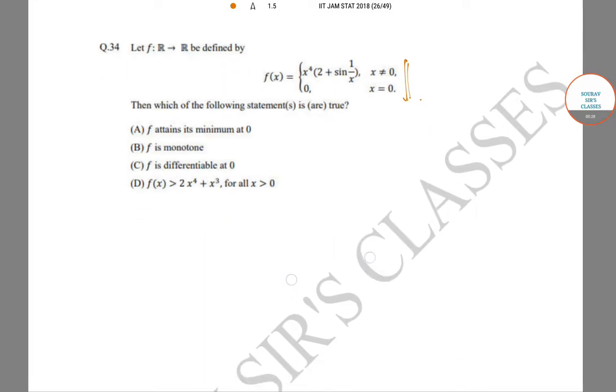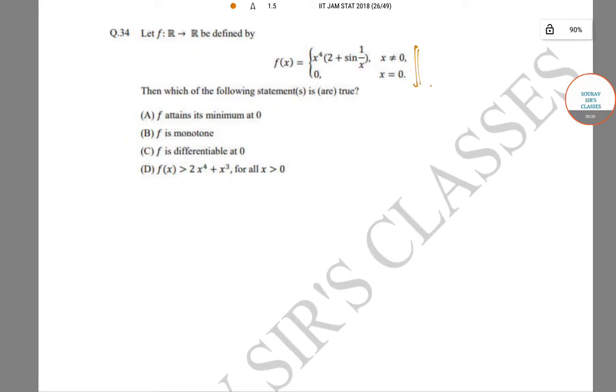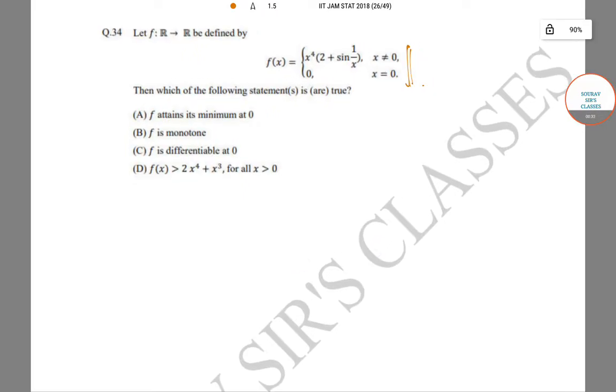The first step is checking differentiability at 0. Now, limit as h goes to 0 of [F(h) - F(0)]/h equals limit as h goes to 0 of h^4(2 + sin(1/h))/h.